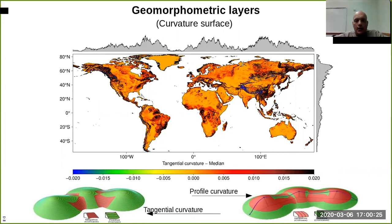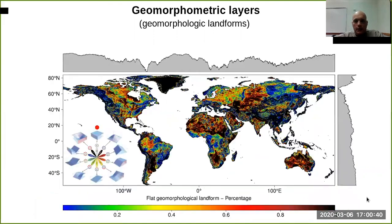These curvature maps already tell you which kind of areas are more prone to curvature — both tangential and profile. Let's move to the second one.